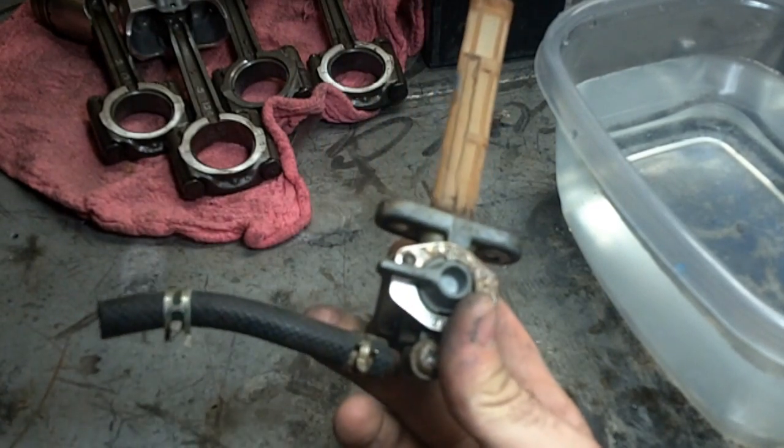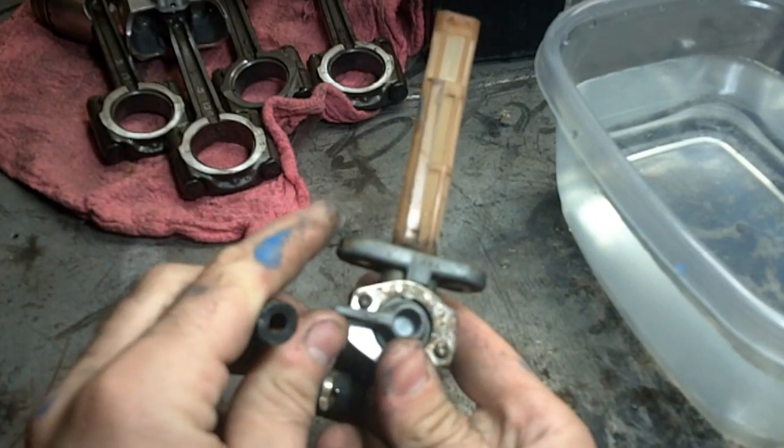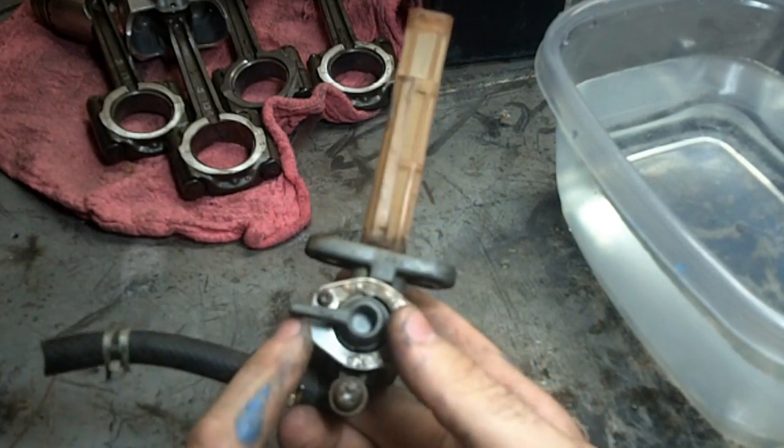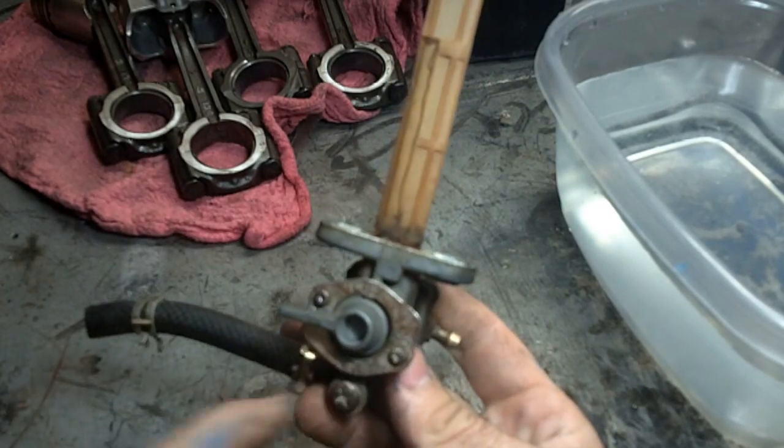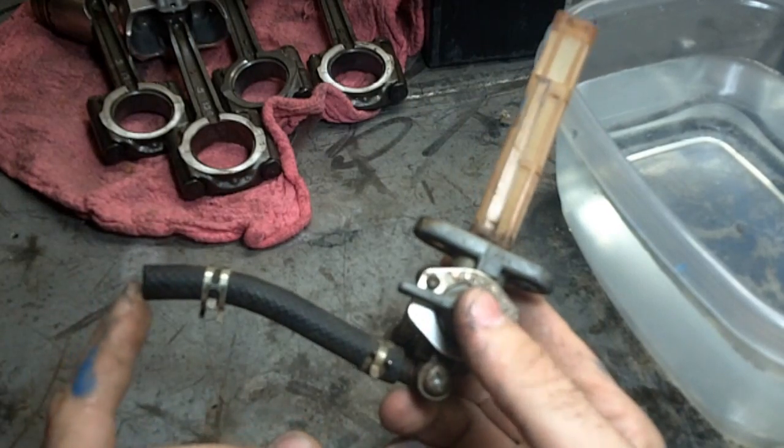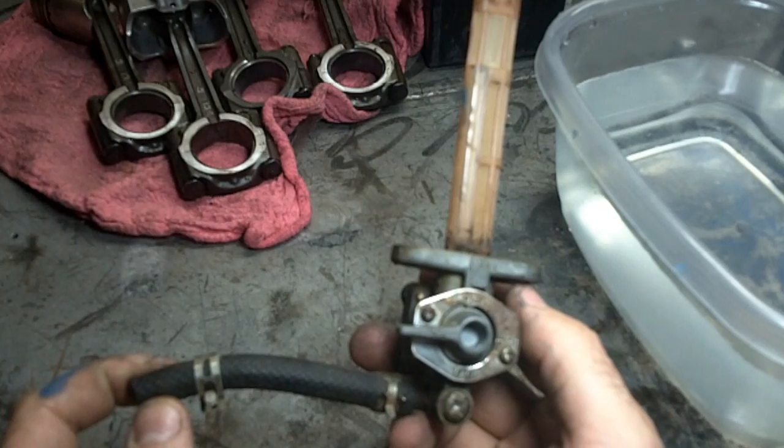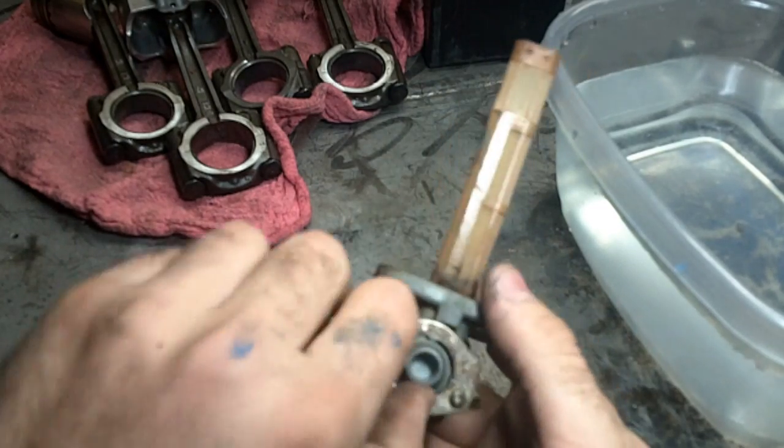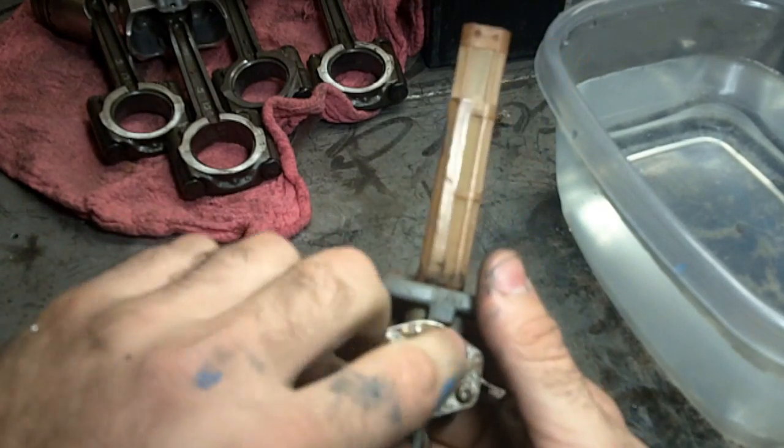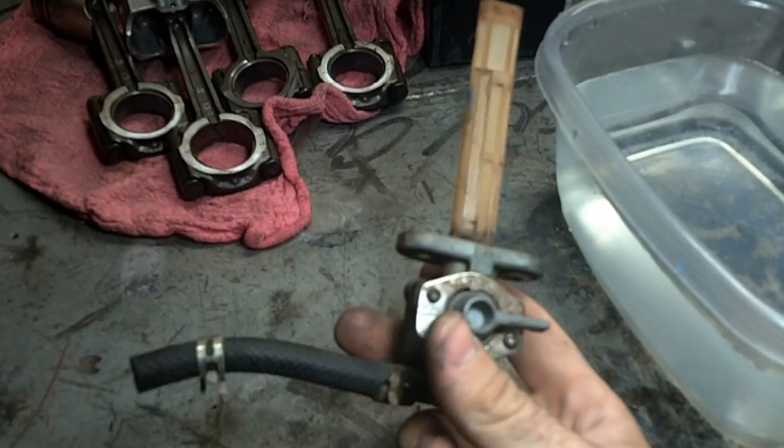Now, if you have a healthy petcock, it should not leak out, not even one drop when you're on reserve or on and the engine is not running, i.e. no vacuum, not even one drop. That's what I try and shoot for whenever I restore carbs and petcocks. If it's on prime, obviously, gas should just flow freely.